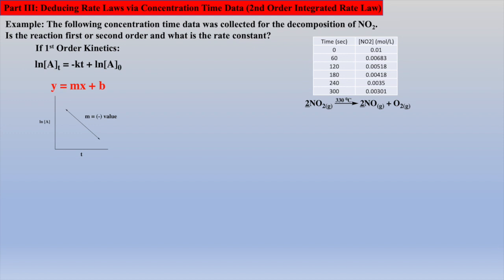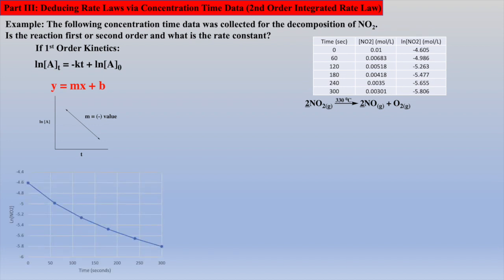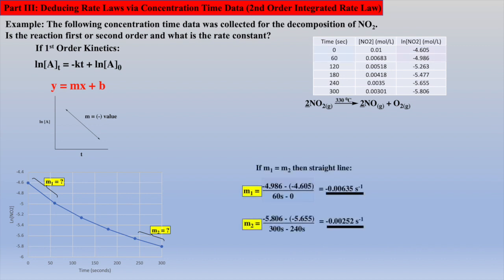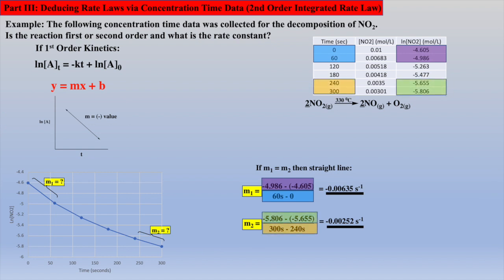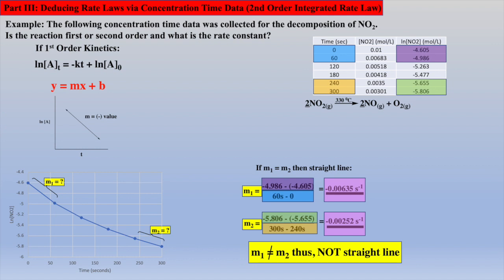A plot of the natural log of NO2 concentrations versus time will be a straight line. So let's create a new column for natural log of NO2 concentrations and plot it against time. Clearly this is not a straight line. Alternatively, we could examine the slope of the first two and last two data points and see if they are equal. Calculating slope 1 followed by calculating slope 2, we see that the slopes are not equal, and we have proven this reaction does not follow first-order kinetics.